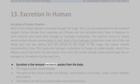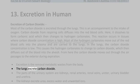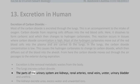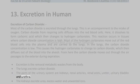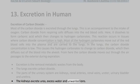Excretion is the removal of metabolic wastes from the body. The lungs excrete carbon dioxide. The parts of the urinary system are kidneys, renal arteries, renal veins, ureter, urinary bladder, and urethra. The kidneys excrete urea, excess water, and unwanted ions.